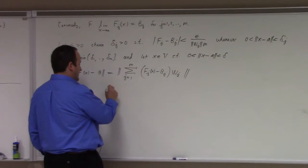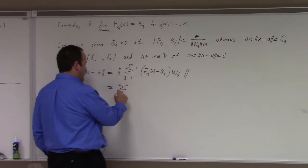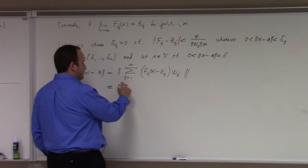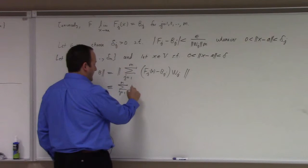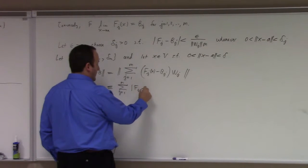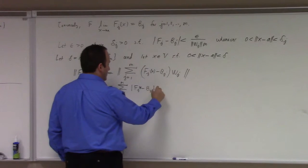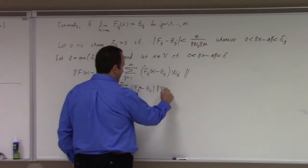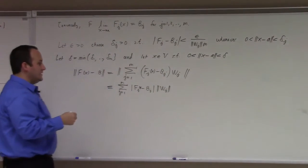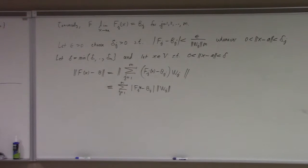And then I just use the triangle inequality and the usual properties of the norm to simplify this. This gives me less than or equal to the sum j equals 1 to m of the absolute value of x of j minus b sub j times the norm of wj. Triangle inequality and absolute homogeneity m-fold times.